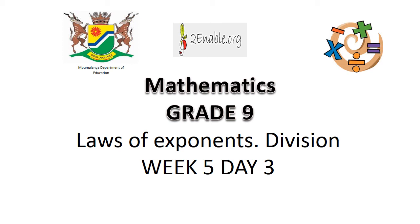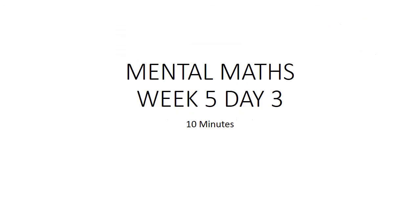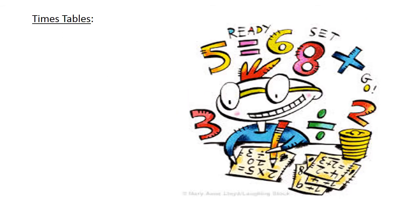Laws of exponents, division. Mental math. Times tables. 6 times 9 equals 54. 11 times 7 equals 77. Addition.